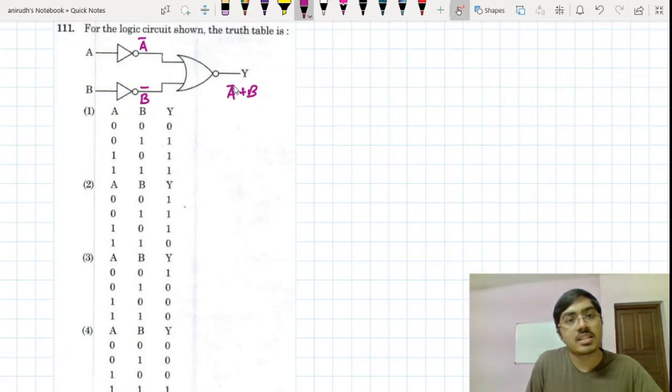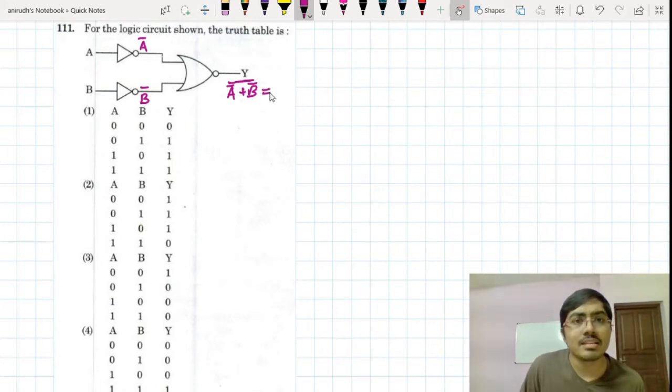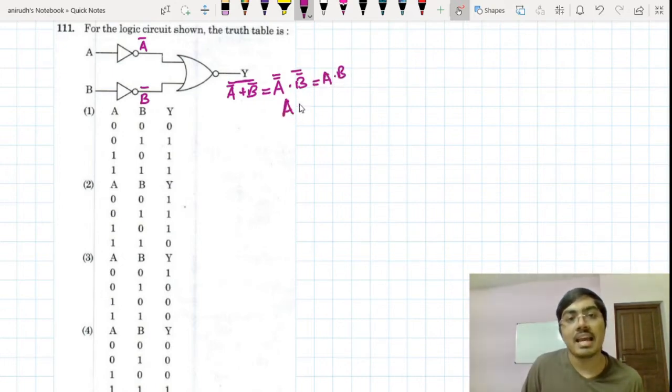This is A bar plus B bar, and this is an OR gate, this is a NOR gate now. So how will you solve this? This is simply an AND gate.